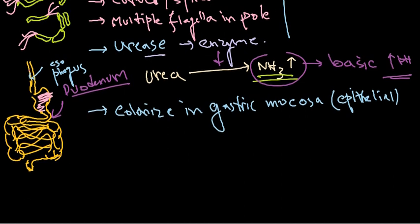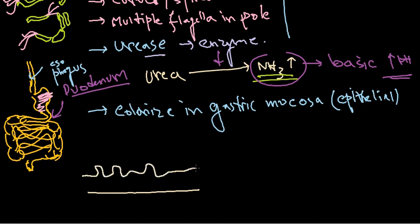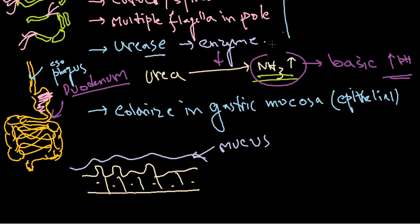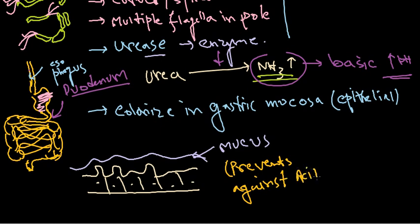If we look at the lining of the cells — these are the cells having nucleus — outside of the cells there is a mucosal layer. This mucus layer protects the duodenum wall against HCl. It prevents the duodenum wall against the strong stomach acid, which is very important.